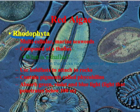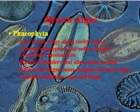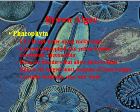Brown algae, or Phaeophyta, live in salt water along rocky coasts. They contain chlorophyll and yellow-brown carotenoids, also called fucoxanthin, and have air bladders that allow them to float. Kelp is actually the largest and most complex of the brown algae. It contains a holdfast, a stipe, and a blade. You'll see some examples of these later in lab or in pictures.